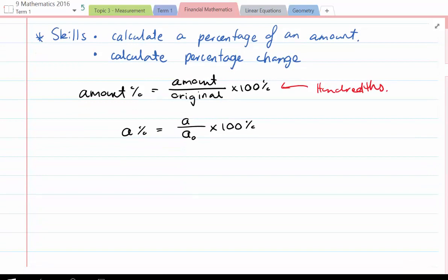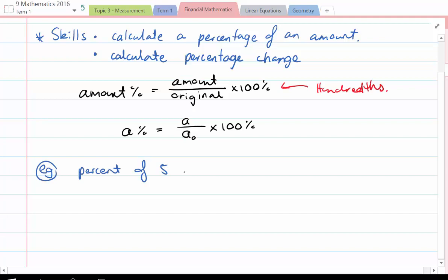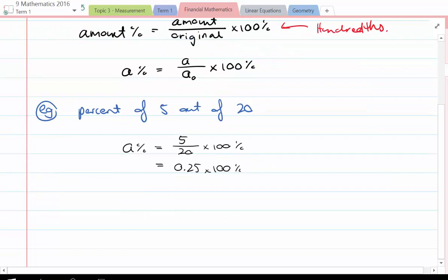Say I was trying to find percent of 5 out of 20. That would mean that the percent would be 5 over 20 multiplied by 100%. So 5 on 20 will be 0.25 and when we multiply that by 100 we get 25%.